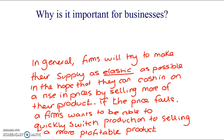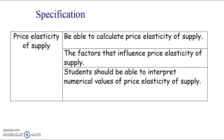Why is PES important for business? In general, firms will try to make their supply as elastic as possible because they hope to profit from rises in prices. If the price falls, they want to be able to move their factors of production into something more profitable. So firms want to be very responsive to changes in price. Those are all the specification objectives.